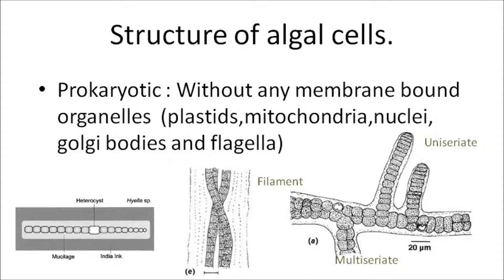Let us now see the structure of algal cells. Basically there are two kinds of cells in algae — prokaryotic and eukaryotic. Prokaryotic are the ones that lack membrane-bound organelles like plastids, mitochondria, nuclei, Golgi, and flagella. An example being cyanobacteria, also called blue-green algae.